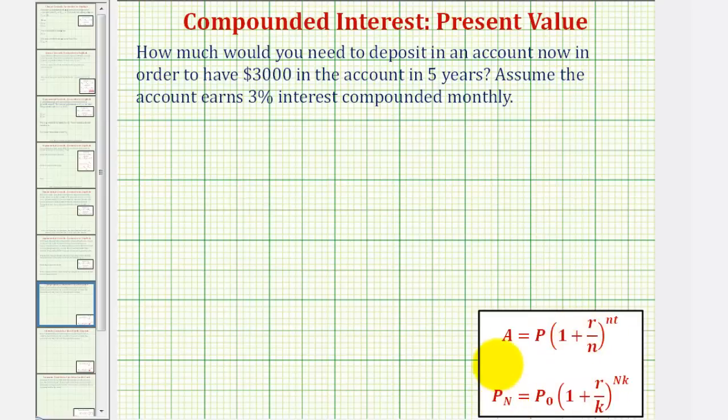Where the account balance after a certain amount of time in this formula is A, in this formula it's P sub N. P in this formula and P sub zero in this formula represent the starting amount or the present value. R is the annual interest rate expressed as a decimal in both formulas.